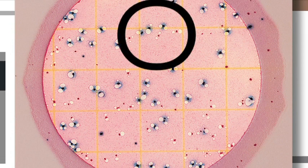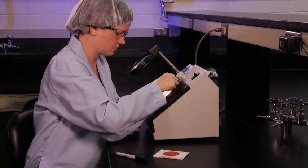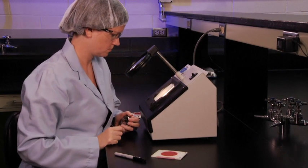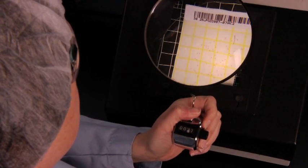The total coliform count is determined by counting all red and blue colonies associated with gas bubbles. Good lighting is necessary for accurate counting. An illuminated magnifier and a hand tally may help for counting bacterial colonies.